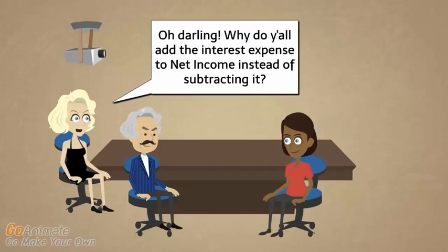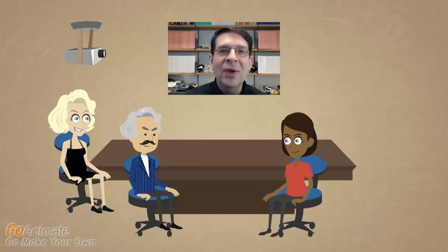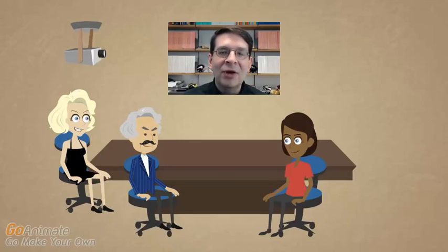Why do y'all add the interest expense to net income instead of subtracting it? And why didn't y'all take a weighted average in the denominator? We add back interest expense because interest expense reduced net income — to remove its effect we add it back, and since net income is after-tax, we add back after-tax interest expense. We are taking a weighted average in the denominator. Under the if-converted method, we assume the debt converted on the first day of the year, so we have a full year of 2,000 shares — not a fractional year — so we record the whole year.